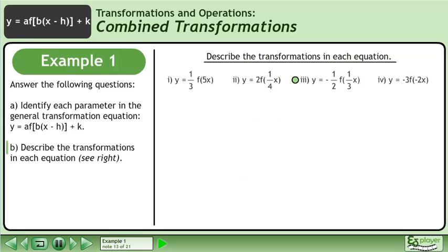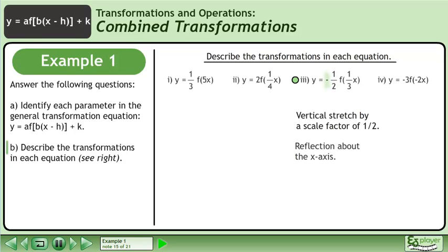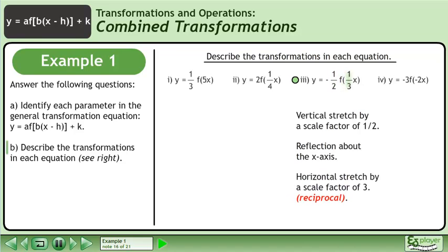Next we have the transformation y equals negative 1 over 2 times f of 1 over 3x. a equals negative 1 over 2, so there is a vertical stretch by a scale factor of 1 over 2. The negative indicates that there is a reflection about the x-axis. b equals 1 over 3. This is a horizontal stretch by a scale factor of 3, since we use the reciprocal for horizontal stretches.